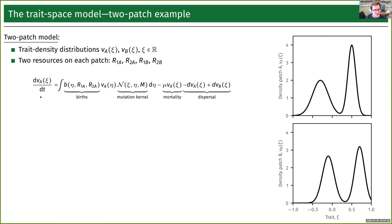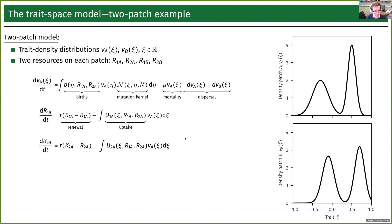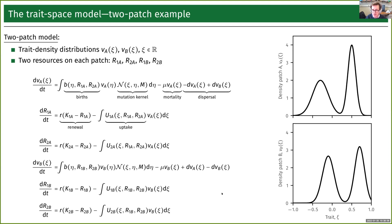We describe what happens to this trait density distribution over time using a differential equation. We model the rate of change on patch A by first having a birth term that depends on the trait and availability of resources. These are filtered through a mutation kernel with variance capital M, always generating a little new variety amongst types over time. We then have some fixed background mortality, and some fixed dispersal between the two patches. Similarly for the resources, we have local renewal on each patch chemostatically, and uptake functions where all individuals take up resources integrated over the entire distribution.